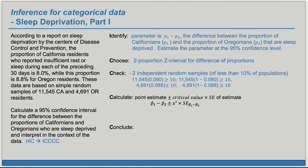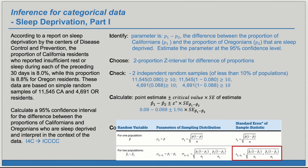We can plug in our sample proportions. For Z-star, for 95% confidence, we'll use 1.96. If we don't remember how to find the standard error of a difference of proportions, we can look it up. The standard error of P-hat 1 minus P-hat 2 is given by a square root expression, and we can plug in the sample proportions and sample sizes as shown.